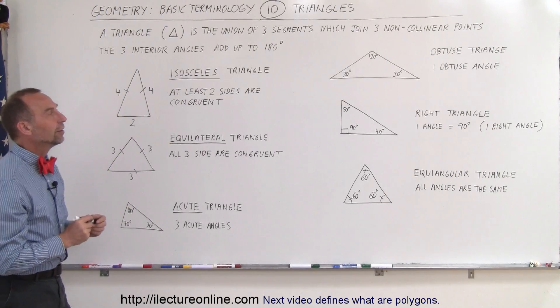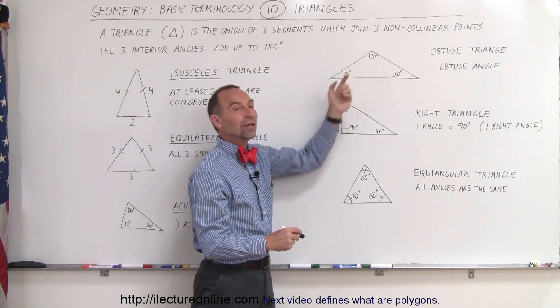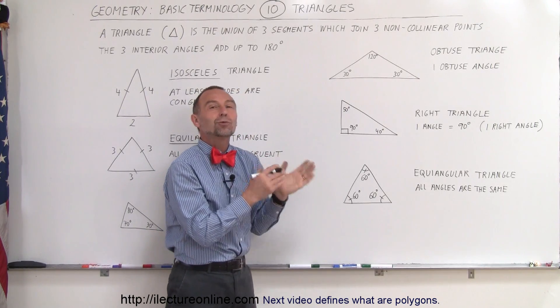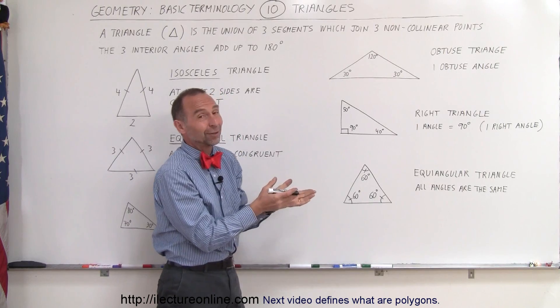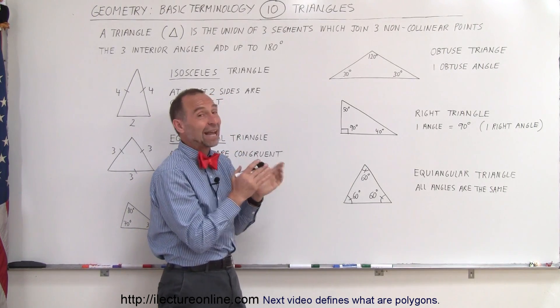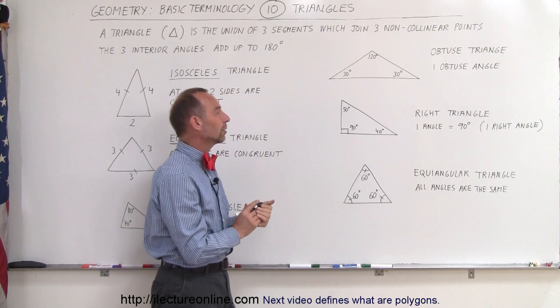An obtuse triangle is a triangle that has one angle that is greater than 90 degrees. By necessity, since they have to add up to 180 degrees, you cannot have two obtuse angles in an obtuse triangle because two angles greater than 90 degrees would add up to more than 180 degrees. So you can't have more than one, but if you have one of them being more than 90 degrees, it's called an obtuse triangle.